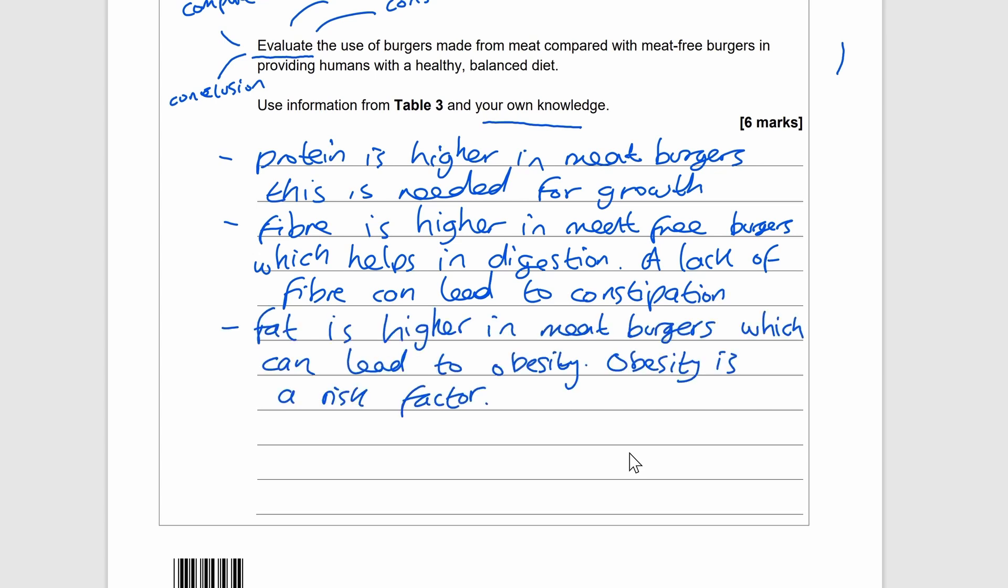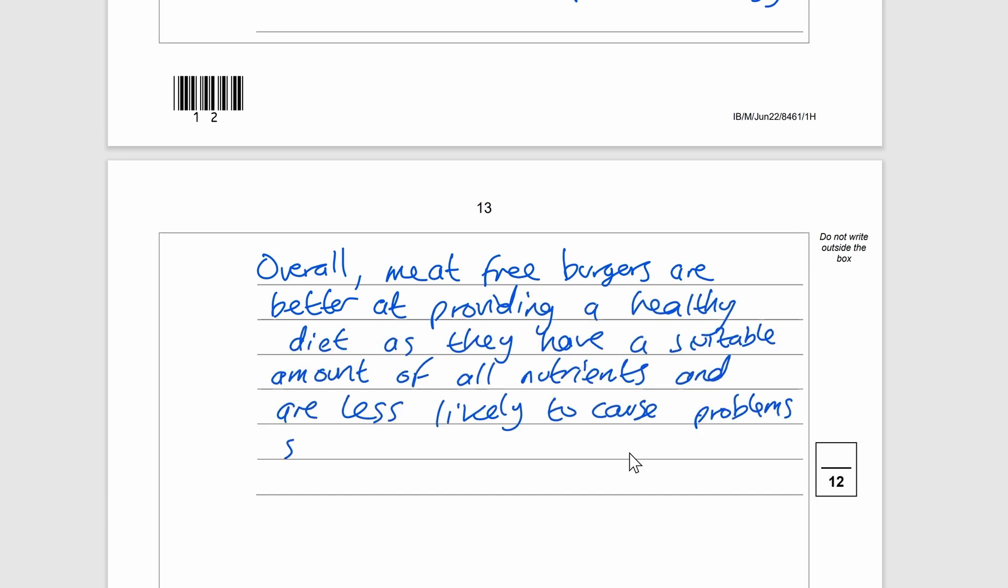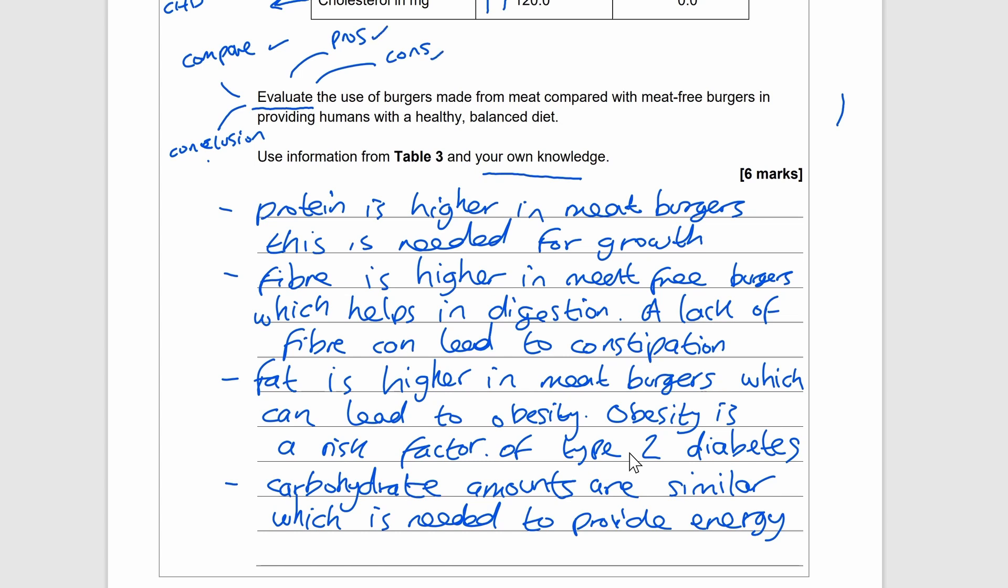The final thing that you will need to do when evaluating is you will need to write a conclusion. So what can you conclude yourself about all the information and your own knowledge which you have shown? So a conclusion or a judgment will be the final thing that you need to put in an evaluation.